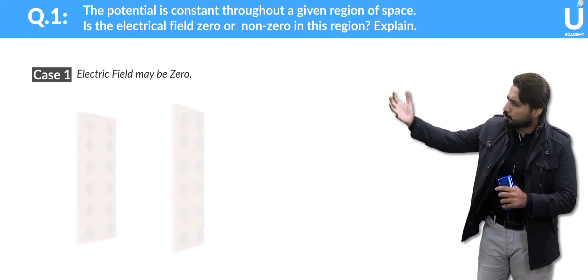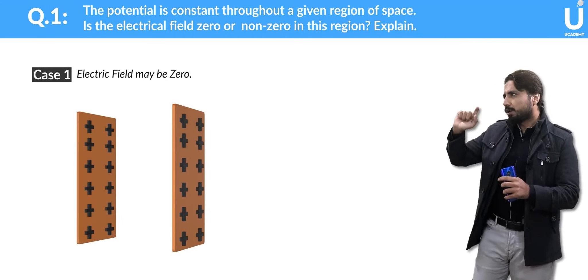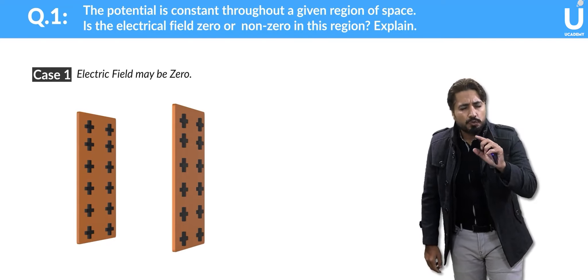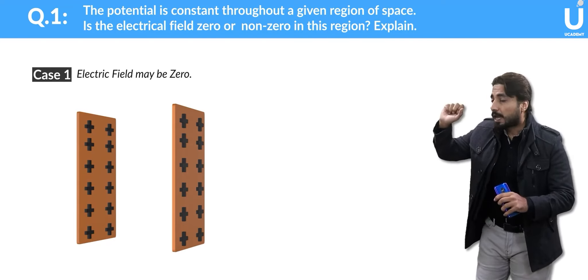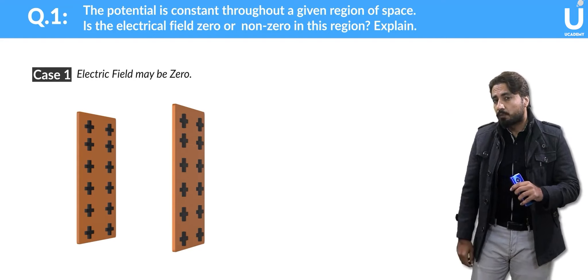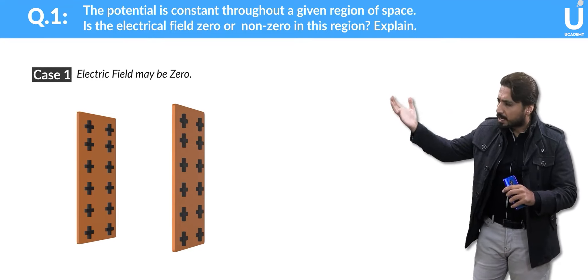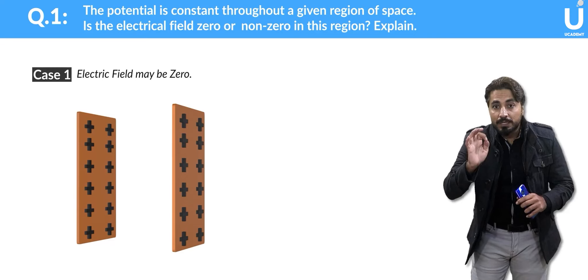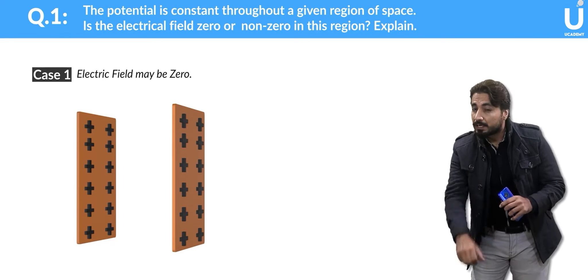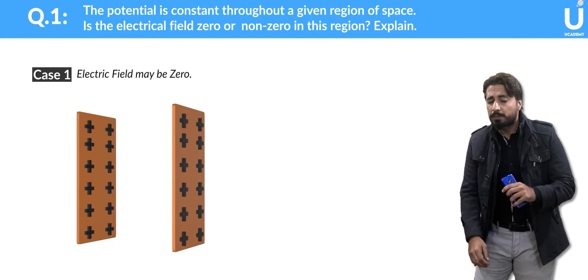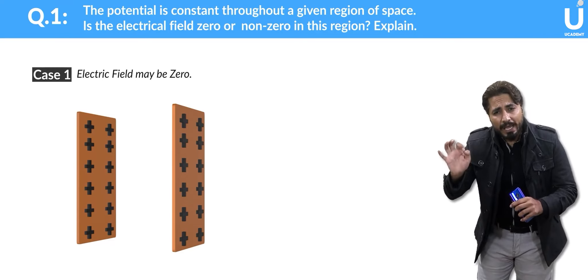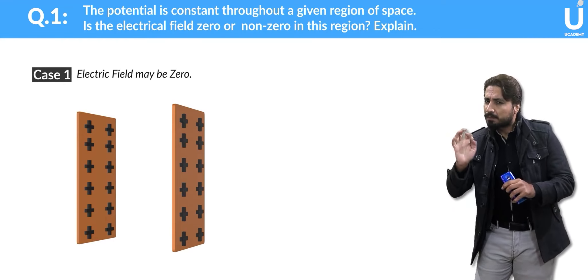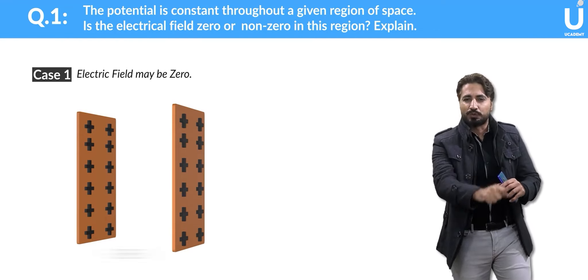Consider two parallel plates where the charges have the same magnitude. Both plates have positive charge. We know about electric field lines that when like charges are present, at the midpoint the resultant electric field is zero.